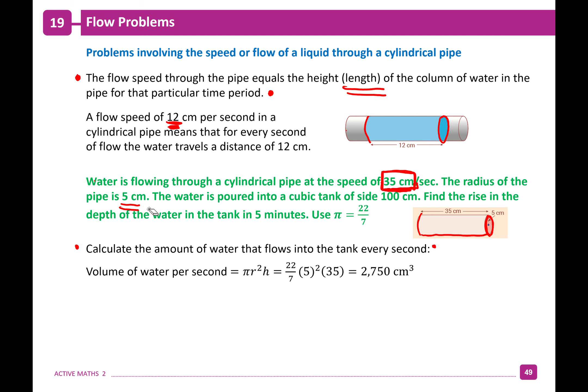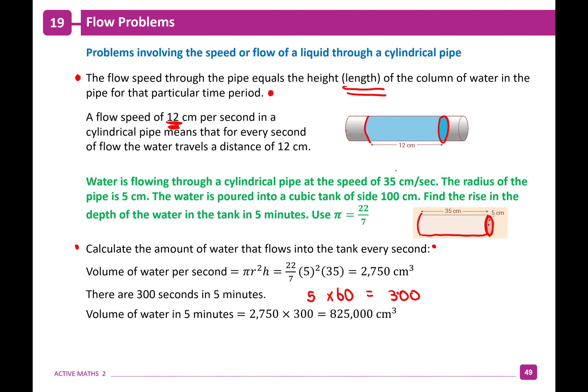We want the volume in five minutes. Five minutes equals 300 seconds. So the volume of water in 300 seconds = 2,750 × 300 = 825,000 centimeters cubed.